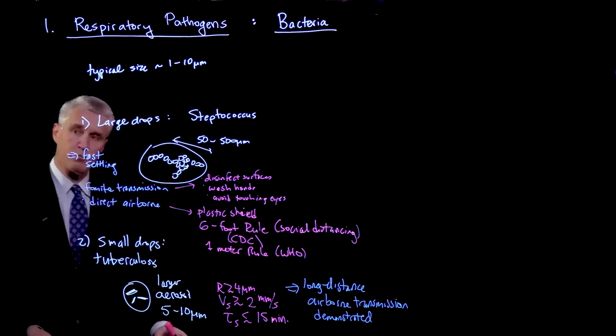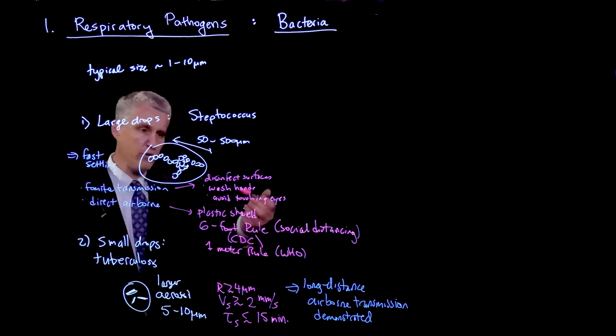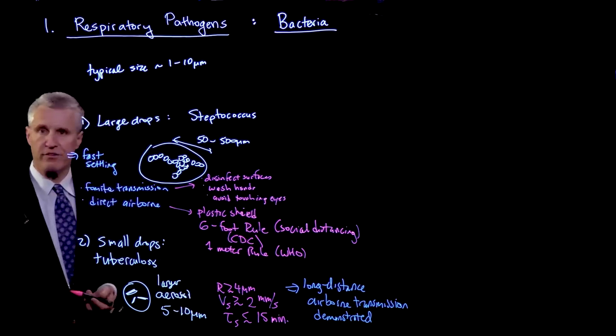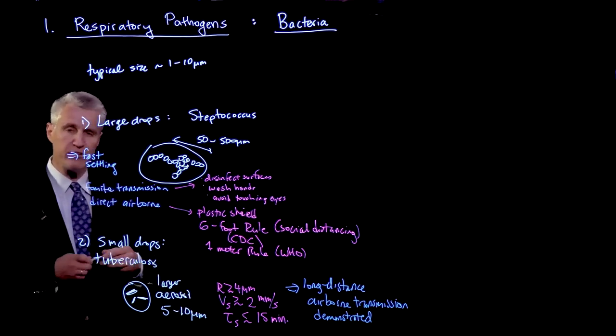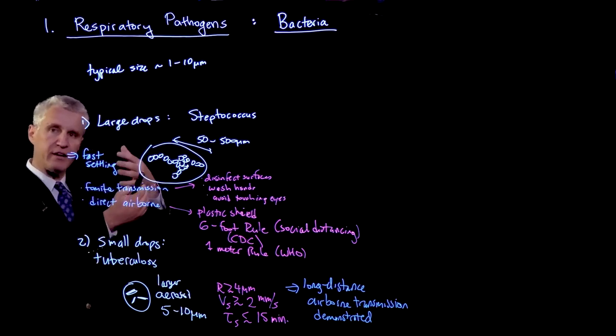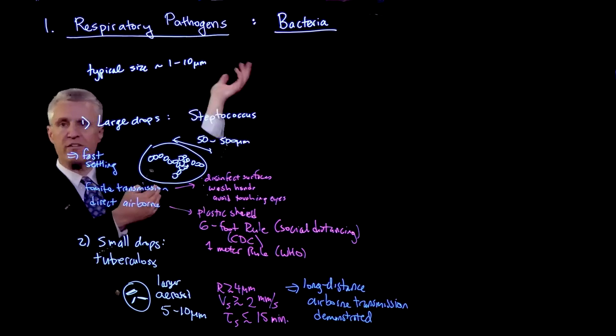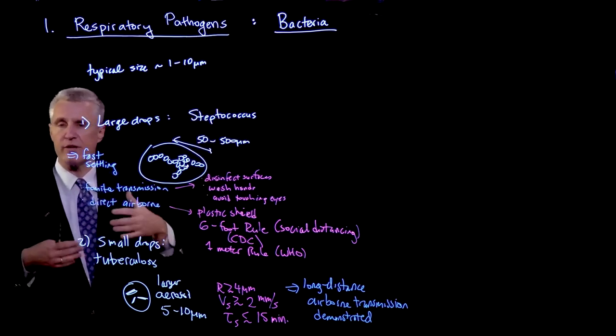And now you might ask, well, what are the preventive measures? So instead of all of these measures, like plastic shields and 6-foot rule, if you actually have airborne transmission, if there's a shield, then the air is going to go right around the shield. And it's going to go everywhere else in the room, because the air is flowing.